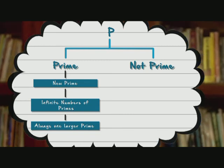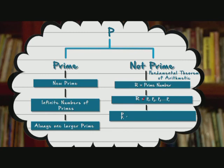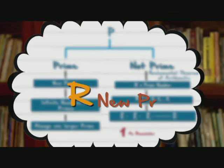However, if P is not a prime, it must be divisible by a prime number, according to the fundamental theorem of arithmetic that we just saw. Let's call that number R. Now, R can't be any of the numbers p1, p2, all the way to pn from our original list. Because if you divide them by P, you will get a remainder 1, which means P is not divisible by any of these prime numbers. So, R is a new prime.